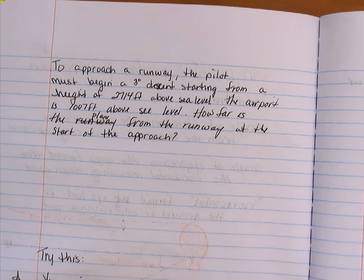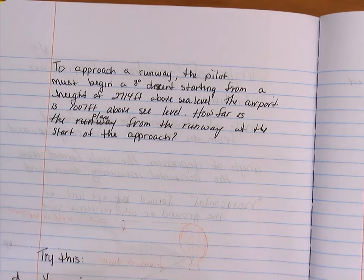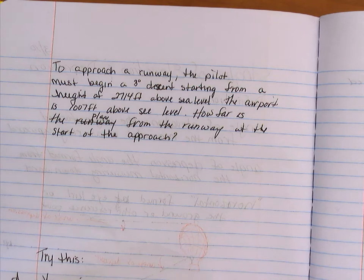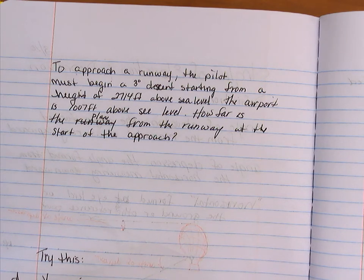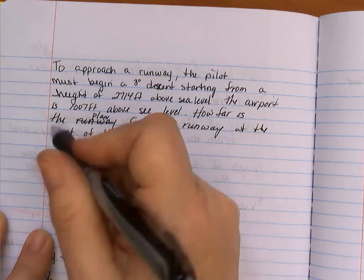Alright. Next problem. To approach a runway, the pilot must begin a 3 degree descent starting from a height of 2,714 feet above sea level. The airport is 1,007 feet above sea level. How far is the plane from the runway at the start of the approach?